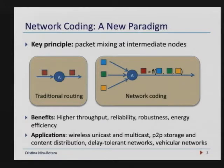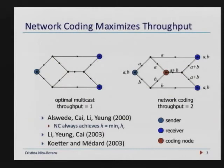This very simple idea actually allows you to build systems with benefits in terms of performance that were not achievable before: higher throughput, higher reliability, robustness, and energy efficiency. We can leverage this mechanism for many applications — wireless, peer-to-peer systems, delay-tolerant networks, vehicular networks. This is not a lecture about network coding, but I wanted to show you two examples of why people were very excited about it when it was first proposed.